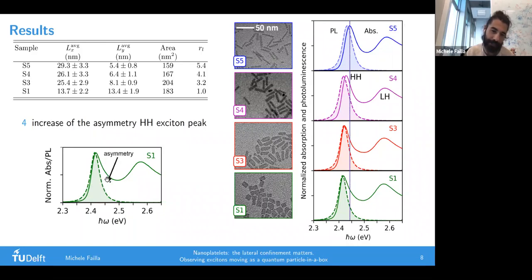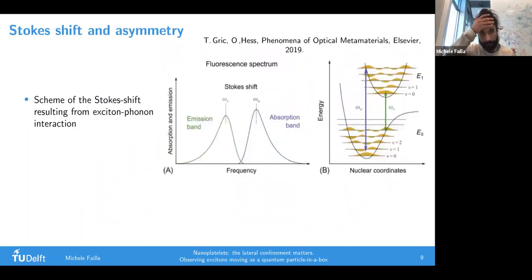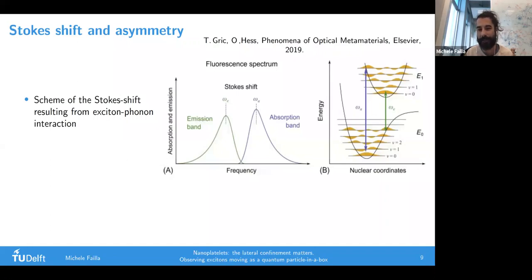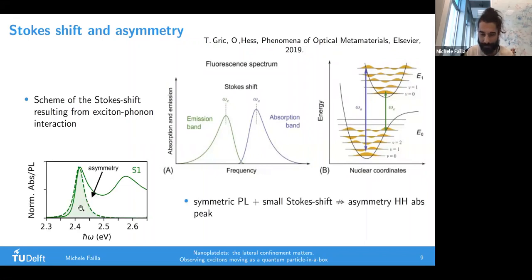You can see the asymmetry by comparing the absorption with the PL. The PL is quite symmetric, but you have a tail in the absorption, which as I'll show, is explained by our model. Regarding the Stokes shift: excitons can couple with phonons, which are vibrations of the crystal. This causes an absorption spectrum asymmetric towards the high energy side and a PL spectrum asymmetric in the opposite direction. In our case, the PL is completely symmetric, which means the asymmetry in the absorption doesn't come from the Stokes shift. We ascribe this asymmetry to our box model for excitons.